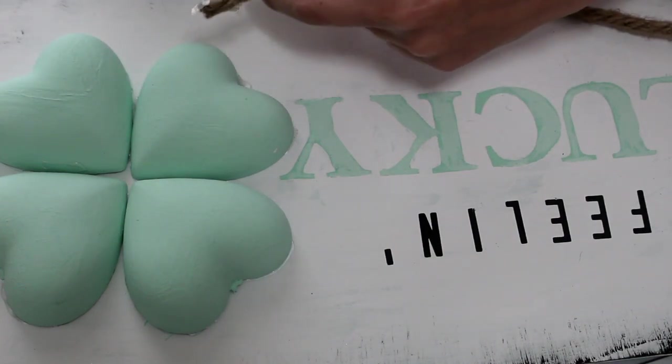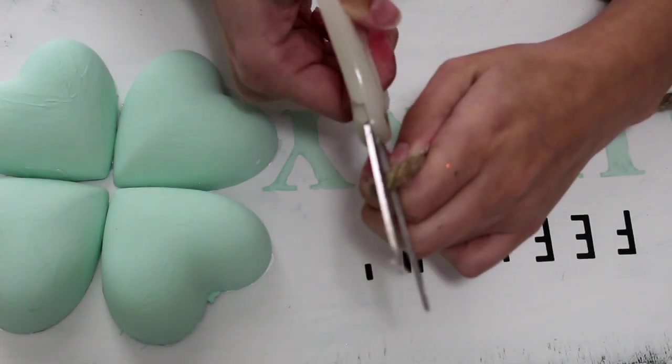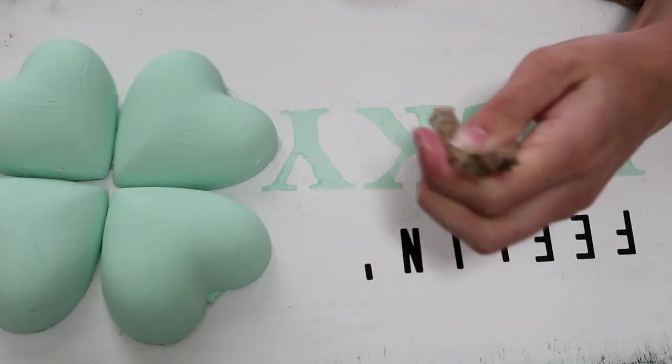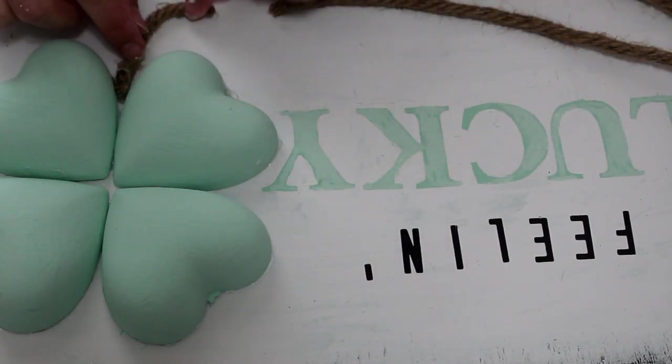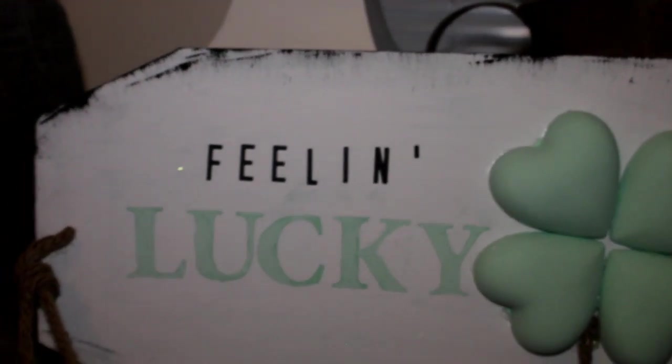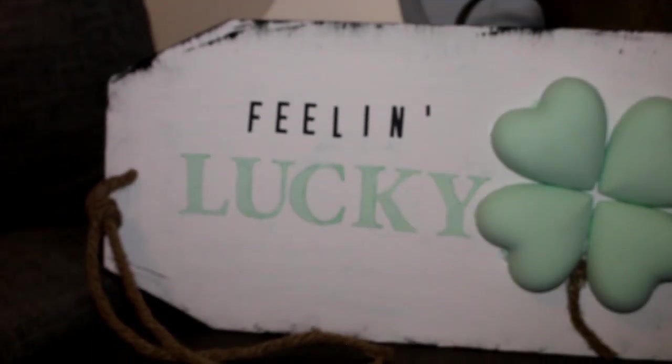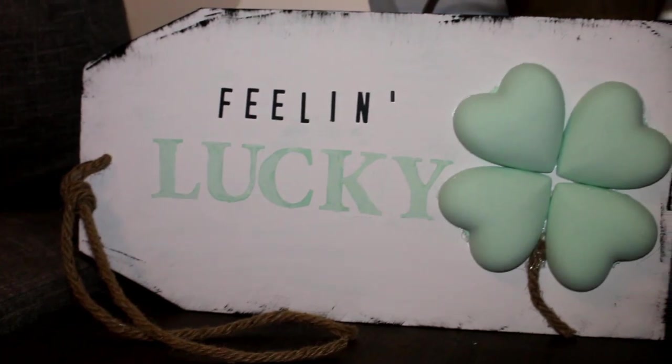Lastly, you're going to take some more of that decorative rope and you're going to use that as the tail for your clover. And guys, there you have it. Your 3D Feeling Lucky tag sign. What do you guys think? I think this was my favorite. Comment down below and let me know what you guys think.